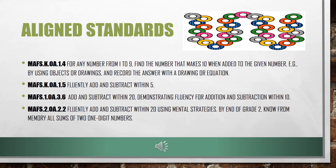First, let's go over the aligned standards. Kindergarten: for any number from 1 to 9, find the number that makes 10 when added to the given number. Kindergarten: fluently add and subtract within 5. First grade: add and subtract within 20, demonstrating fluency for addition and subtraction within 10. Second grade: fluently add and subtract within 20 using mental strategies by the end of second grade. Know from memory all sums of two one-digit numbers.